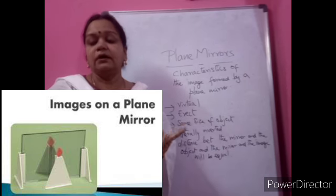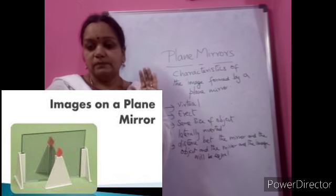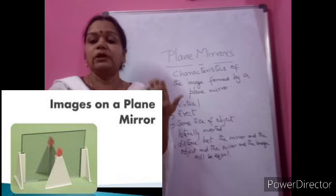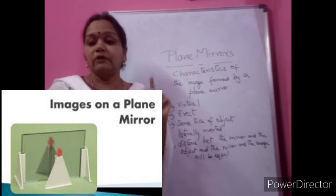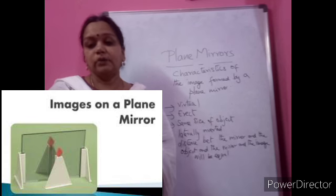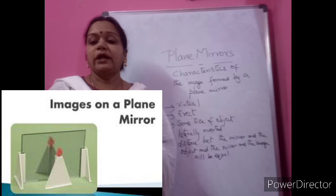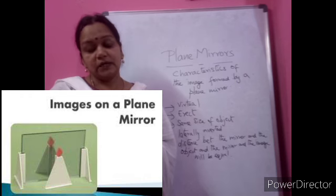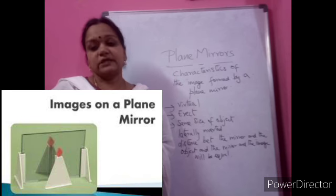So far in this chapter on Light, we have completed: the first introduction part where we recollected luminous and non-luminous objects and basic properties of light; then reflection of light; and today's class on the characteristics of the image formed by a plane mirror. You can extend your learning by collecting more information about real and virtual images. Be ready for the next class. Bye bye!